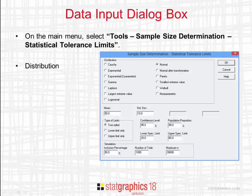The first thing to select is the distribution from which the data have been drawn. There are eleven different probability distributions beginning with Cauchy and ending with Weibull. There's also a selection that assumes the data are normally distributed after a transformation is performed, typically a logarithm or a power transformation. You can also select non-parametric, which estimates tolerance limits without making any assumption about the distribution.